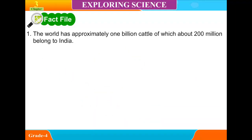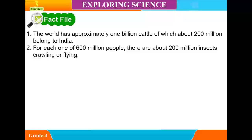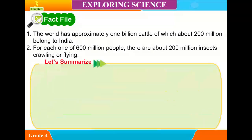Fact file. The world has approximately 1 billion cattle, of which about 200 million belong to India. For each one of 600 million people, there are about 200 million insects crawling or flying.